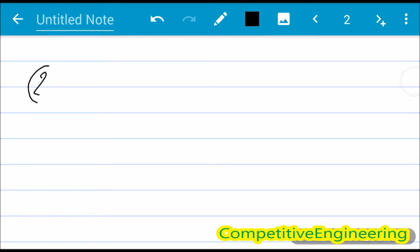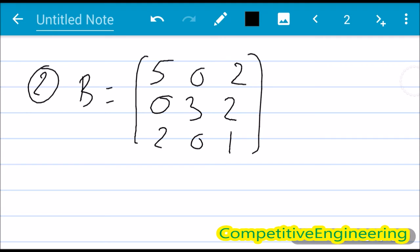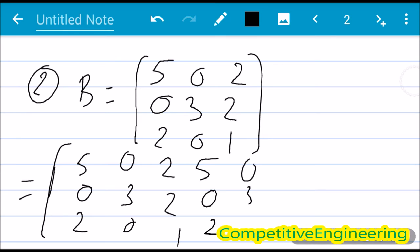I am taking another example. Example 2: Let B, matrix B, equal to [5,0,2; 0,3,2; 2,0,1]. So I am writing the first column again: 5,0,2, second column 0,3,0.